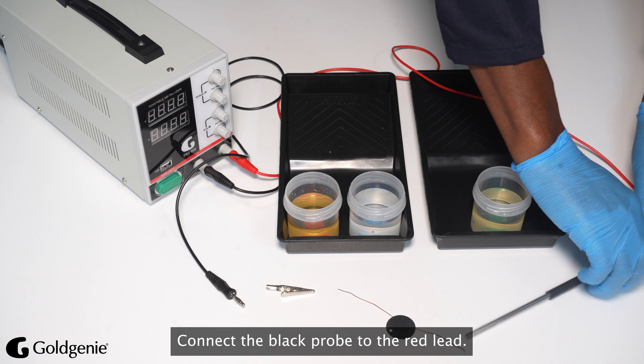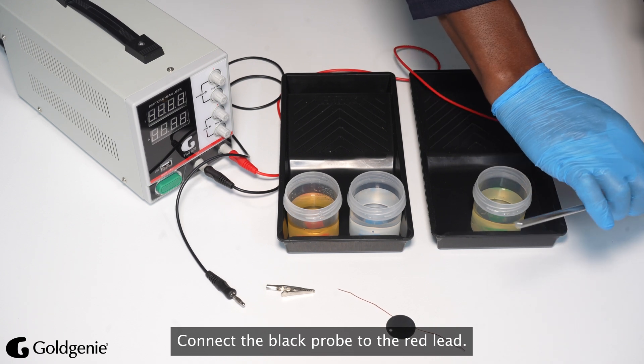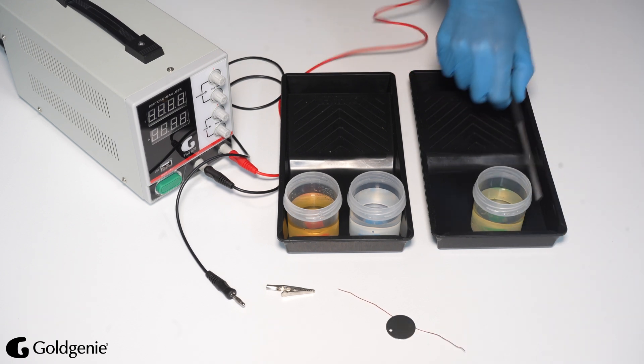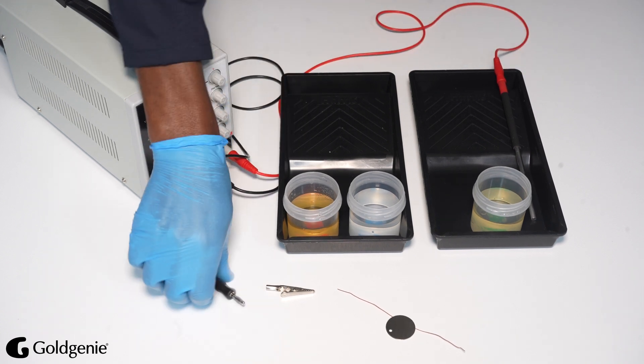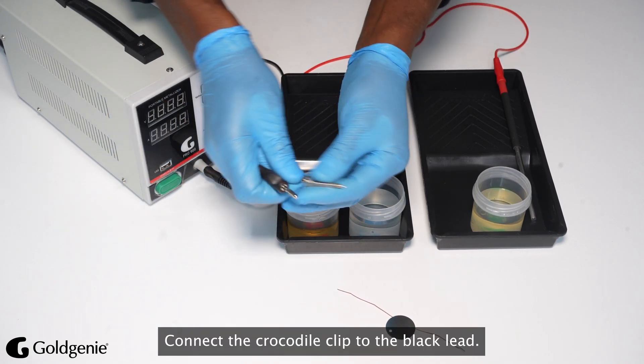The Dipping Method. Connect the Black Probe to the Red Lead. Connect the Crocodile Clip to the Black Lead.